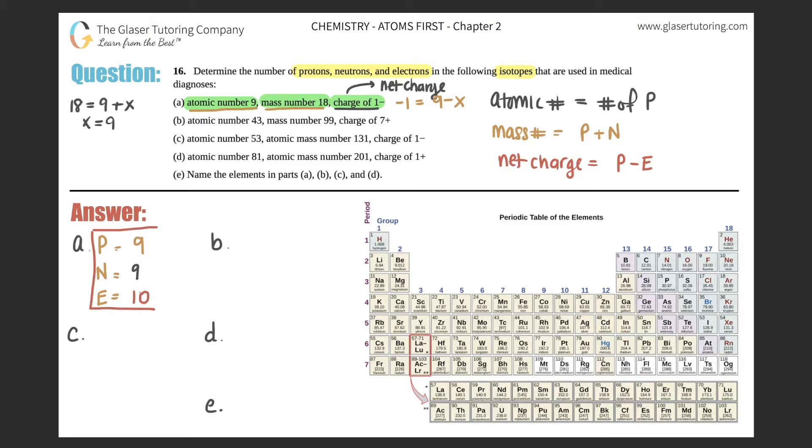So that's going to be the steps that we will need in order to find the protons, neutrons, and electrons. Done with A. B, I'm going to list P, N, and E. They tell us atomic number is 43, so that's the number of protons. Mass number is 99. The mass number will help us identify how many neutrons we have by using mass number equals protons plus neutrons. So if we have 99 equals 43 plus X, subtract 43, you get 56, and that's how many neutrons we have.